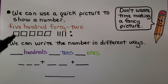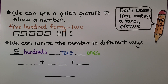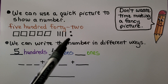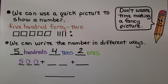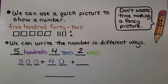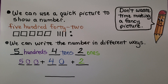We have five one-hundreds — five hundreds. We have four tens and two ones. We can write it in expanded form: five hundreds is written as 500, four tens is written as 40 — a four in the tens place and a zero in the ones place — and two ones is just 2. We can write it in standard form as the three-digit number 542.